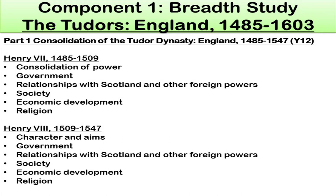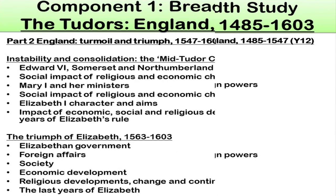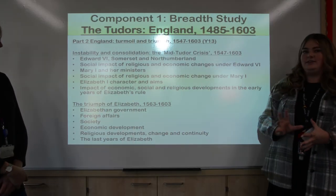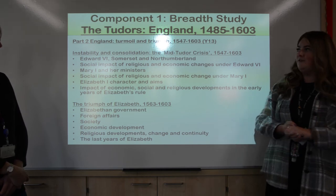In Year 13 we cover the second part — turmoil and triumph — from 1547 to 1603. We look at the instability of the Tudor crisis from 1547 to 1563, examining Edward, Somerset, Northumberland, and Mary and her ministers. Then we move on to Elizabeth from 1563 to 1603, the end of the Tudor dynasty, again looking at social impacts, religious policies, foreign affairs, and society, so you can draw across themes of the whole module.